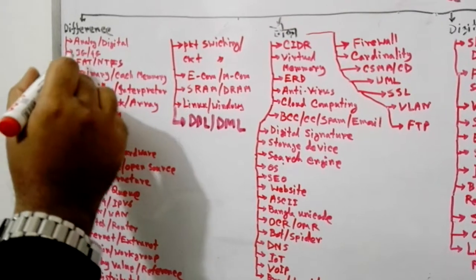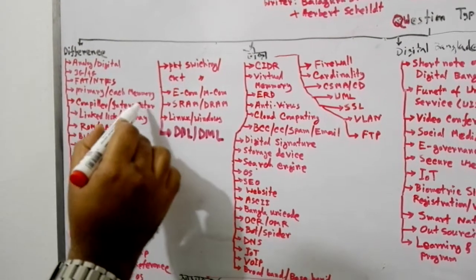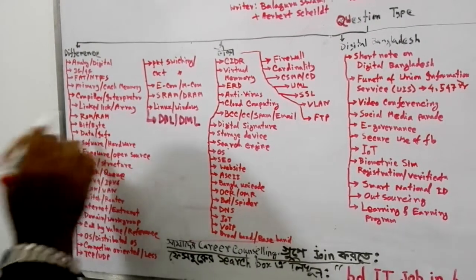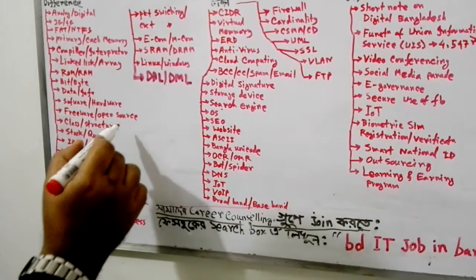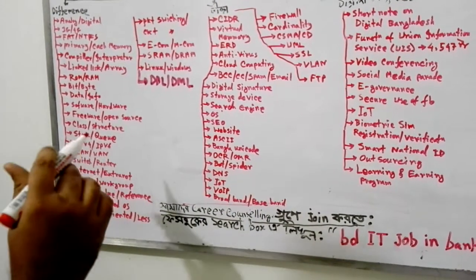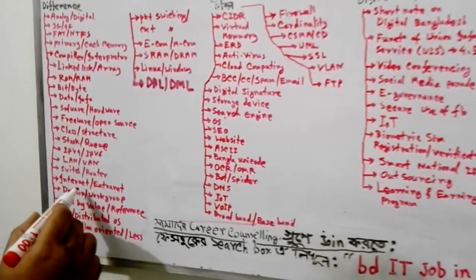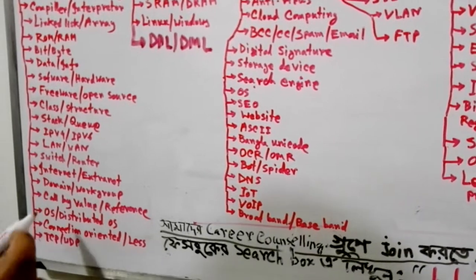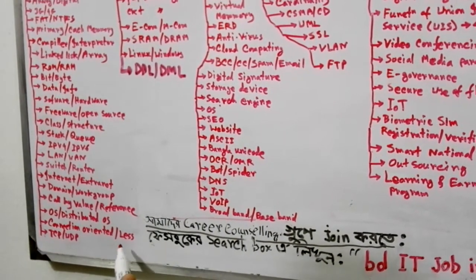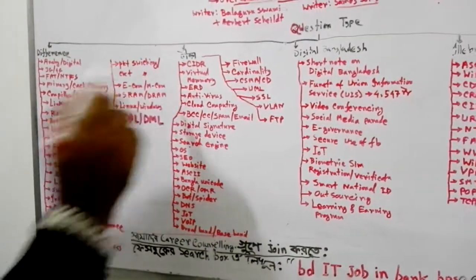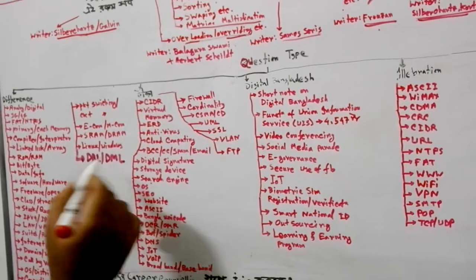Difference-type questions include: analog vs. digital signal, 3G vs. 4G, FAT vs. NTFS, primary memory vs. cache memory, compiler vs. interpreter, link list, ROM vs. RAM, bit vs. byte, data vs. information, software vs. hardware, freeware vs. open source, class vs. structure, stack, IPv4 vs. IPv6, LAN, switch vs. router, internet vs. extranet, domain, call by value vs. call by reference, operating system vs. distributed operating system, connection-oriented vs. connectionless, TCP vs. UDP, packet switching vs. circuit switching, e-commerce, SRAM vs. DRAM, Linux, DDL vs. DML, etc.